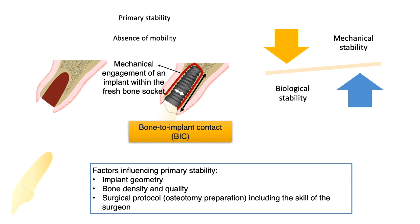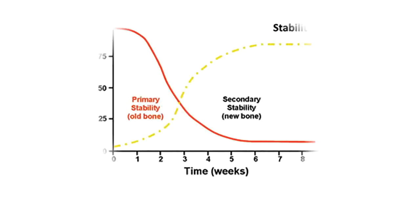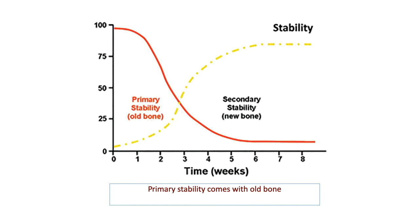Initial stability at placement is termed primary stability, while the development of osseointegration during the subsequent healing process is termed secondary stability. In the graph, primary stability — provided by old bone — is lower initially and increases gradually, whereas secondary stability — provided by new bone — is higher initially and gradually reduces over a period of about two weeks. These are two important factors for implant success.